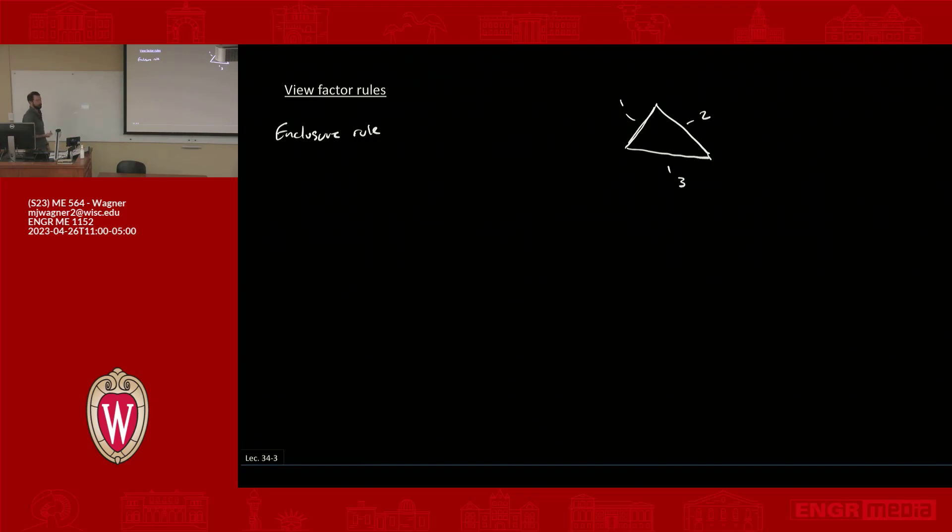The enclosure rule says if I look at the view factor from one to one—that is the view factor from one to itself—and add to that the view factor from one to two, and add to that the view factor from one to three, those have to sum up to be one. It's a pretty intuitive rule. It's saying if I emit light from one, it has to go somewhere. It's an enclosure, so if you add up all the light that's emitted, it's going to equal one. I think the subtle thing here is the indexing.